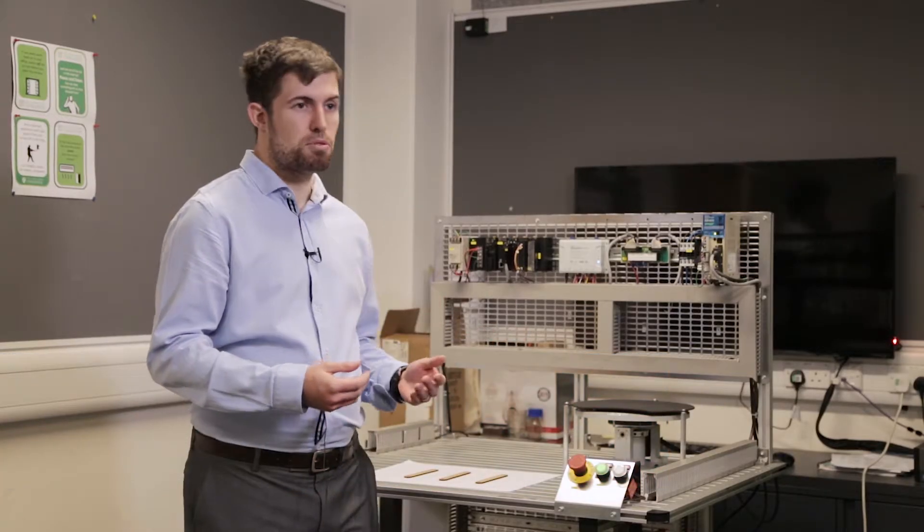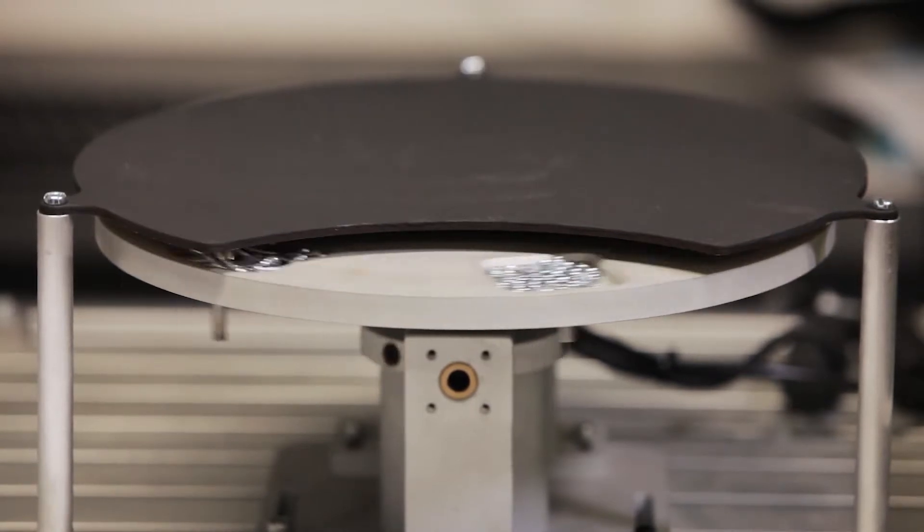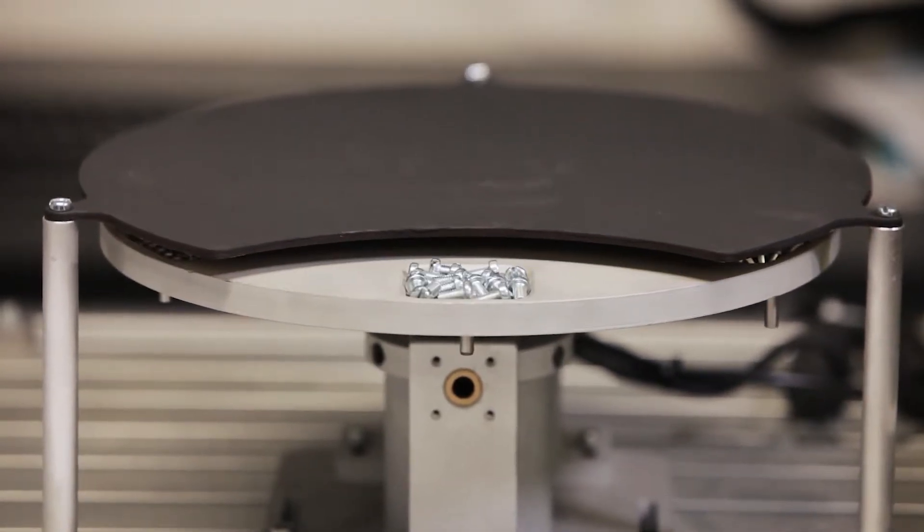So this demo looks at using a digital voice assistant to help a worker through an assembly operation. The idea is that a worker can ask the system for particular fasteners, be the nuts or bolts, and the system will then provide them with the correct one and give them some verbal feedback saying your M5 nuts are ready.